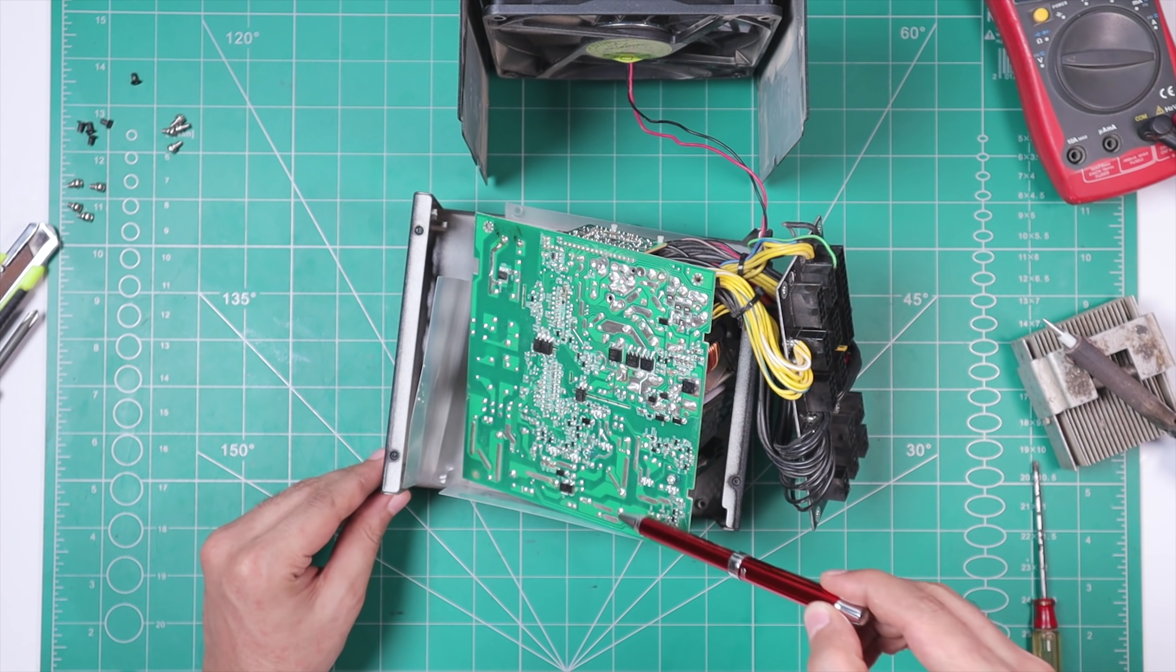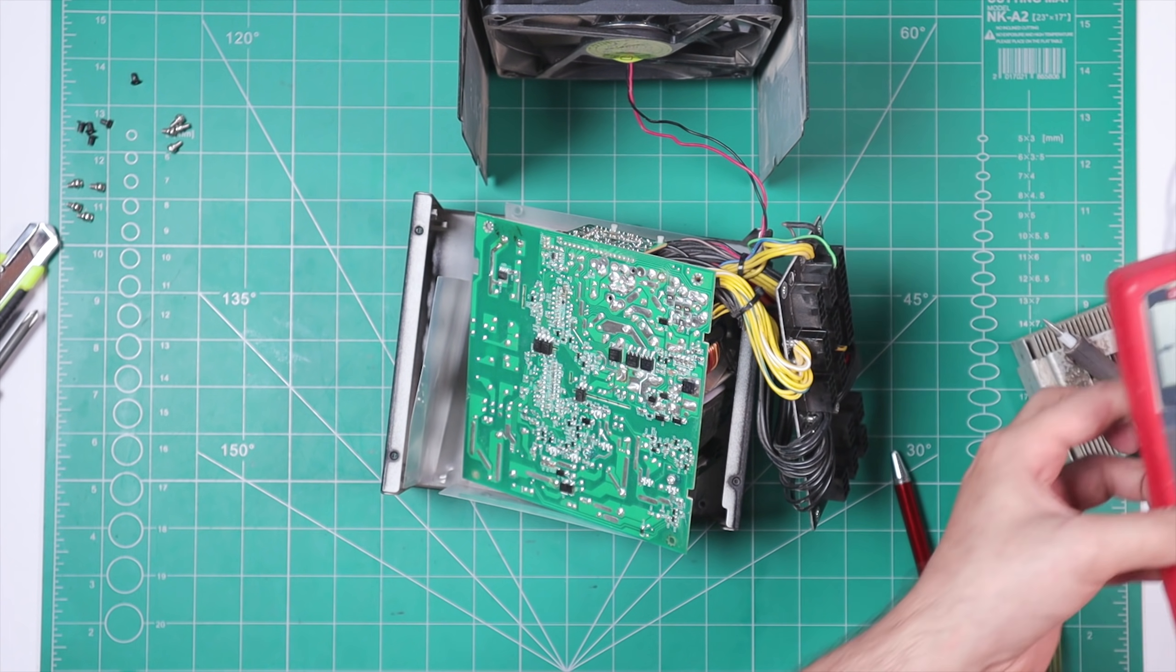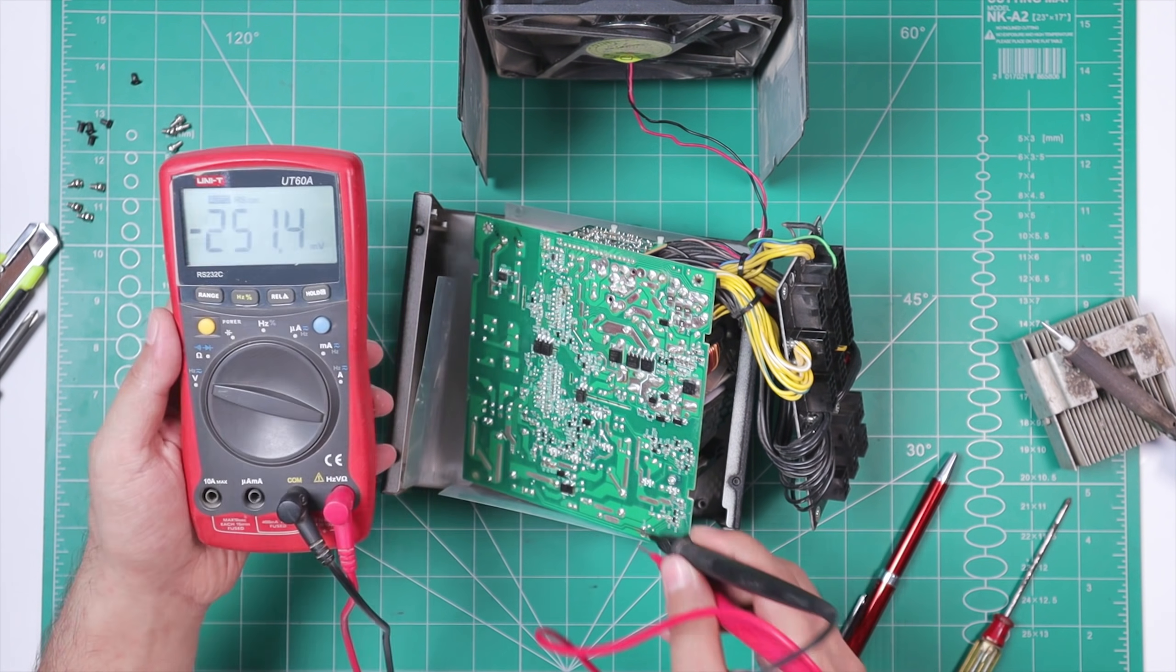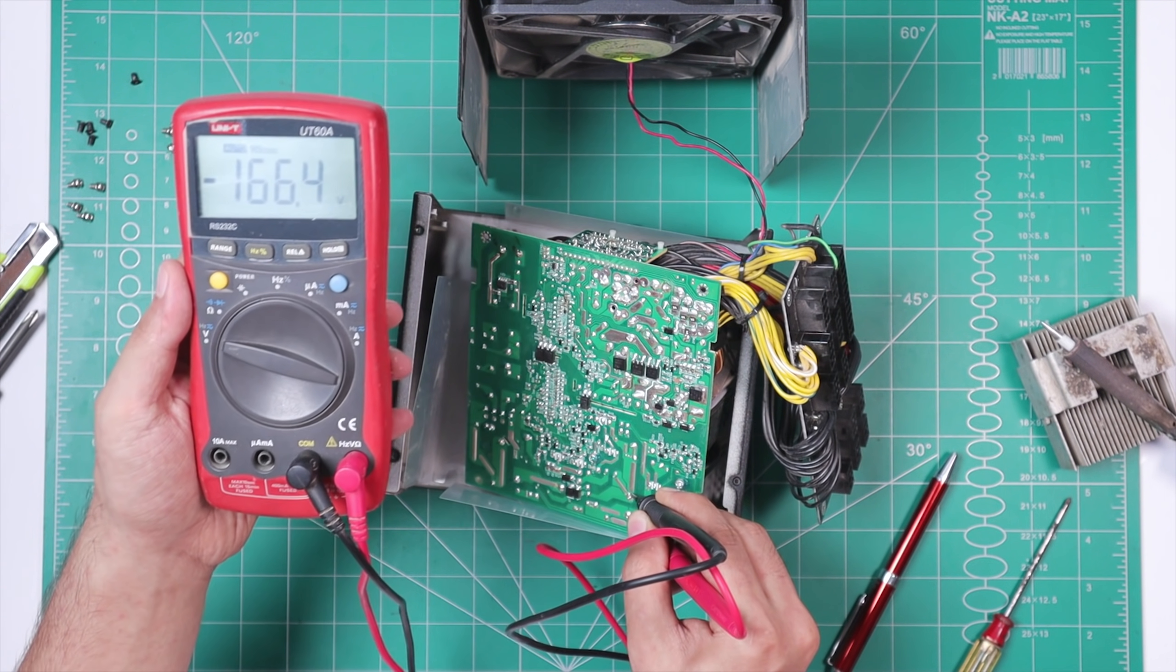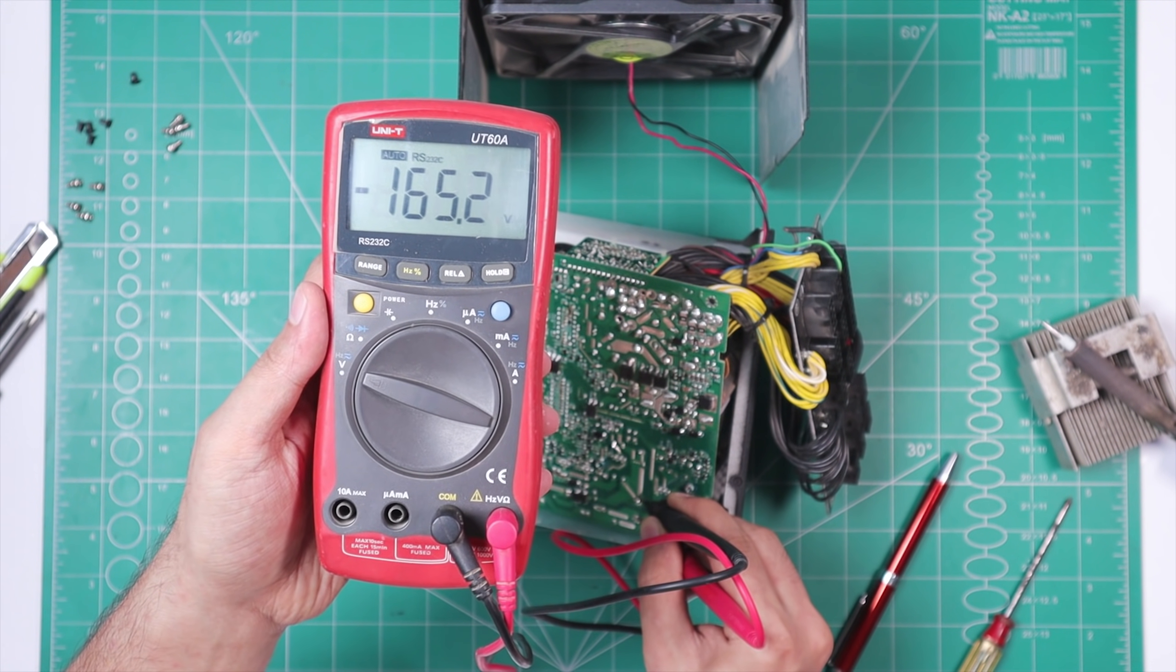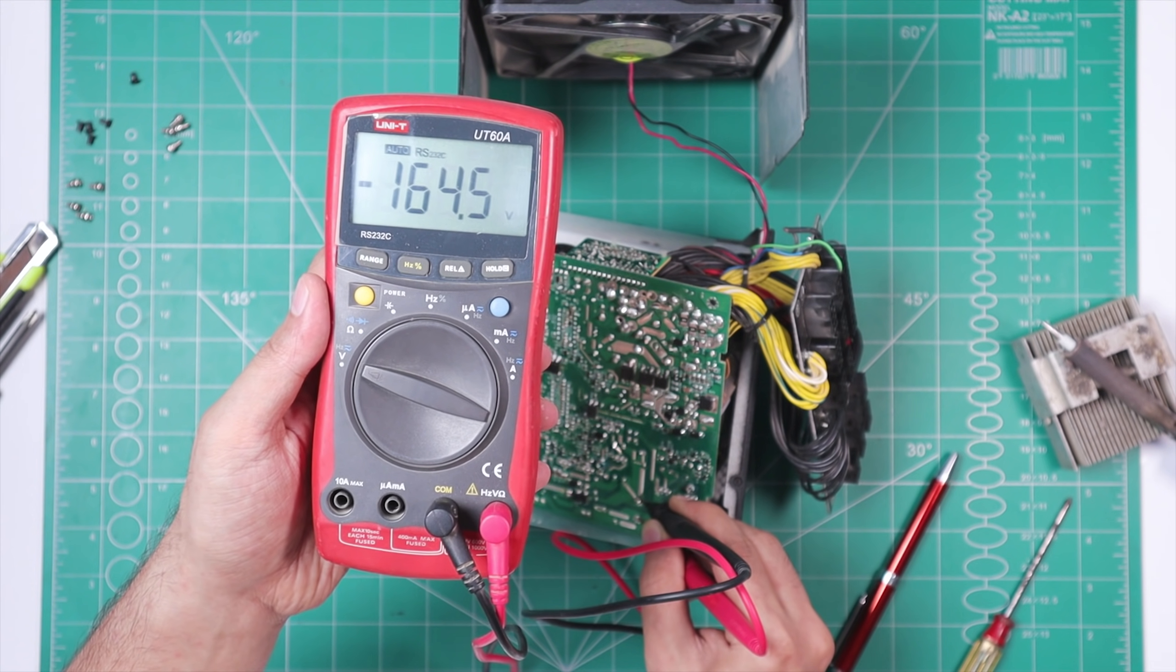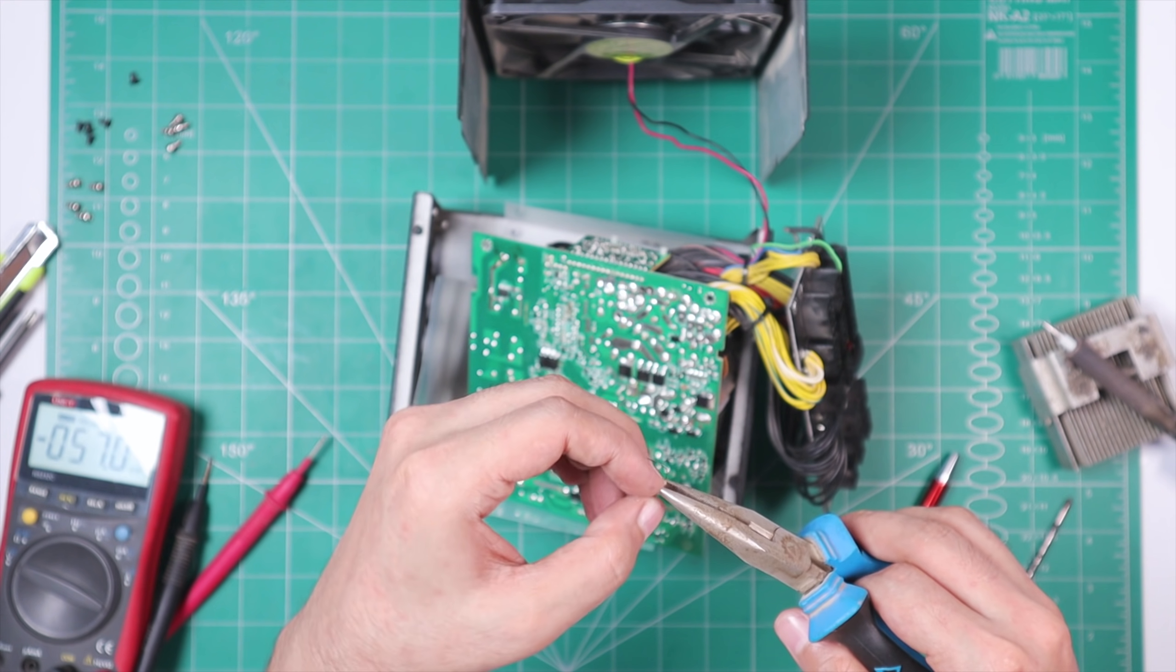So before going any further, let me first show you guys how many volts do we actually have in this power supply's bulk capacitor. 165 volts. Well that's shocking, quite literally, because it still can give you quite some shock. So I'm just gonna discharge this capacitor using a 47k ohm resistor.